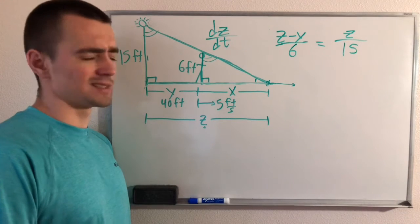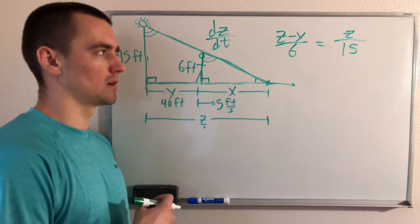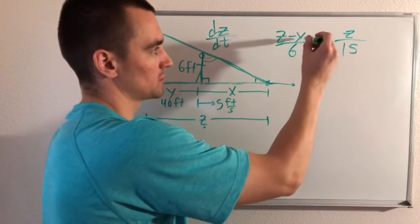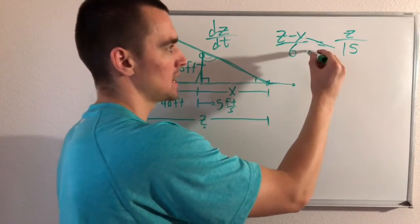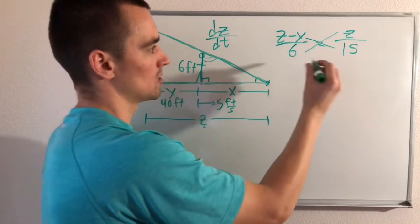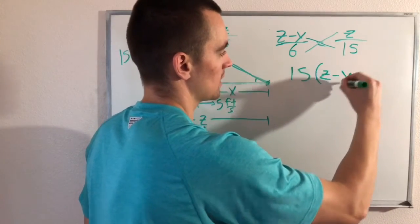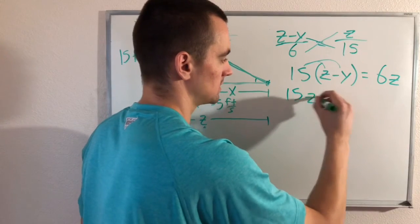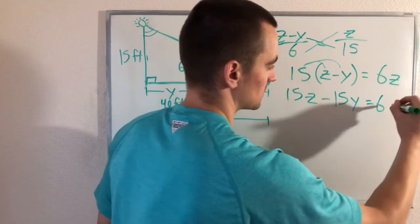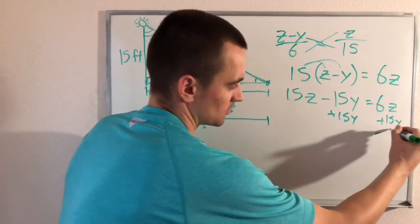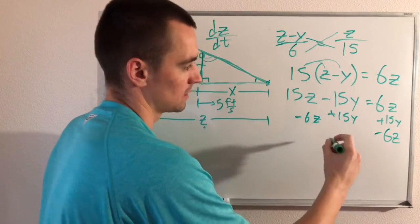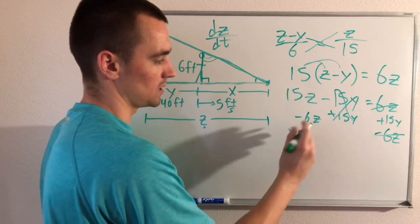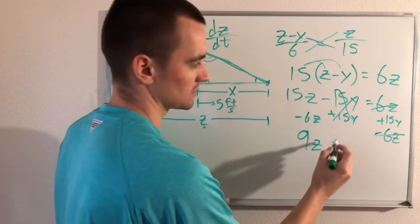Before differentiating, let's simplify by cross-multiplying: (Z minus Y) times 15 equals 6 times Z. Distributing gives 15Z minus 15Y equals 6Z. Adding 15Y to both sides and subtracting 6Z from both sides gives us 9Z equals 15Y — a simple equation ready for implicit differentiation.